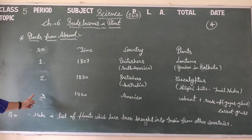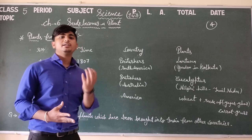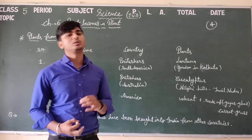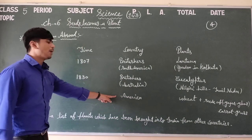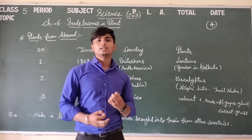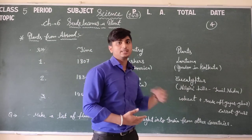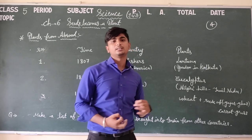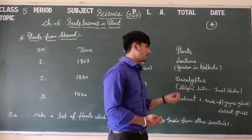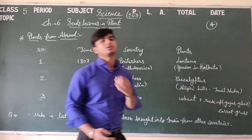Lastly, in 1950, India imported wheat from America. Along with the wheat containers, by chance, there were some seeds — those seeds were gajar ghas, or carrot grass. So carrot grass was accidentally introduced into India through the wheat import from America in 1950.